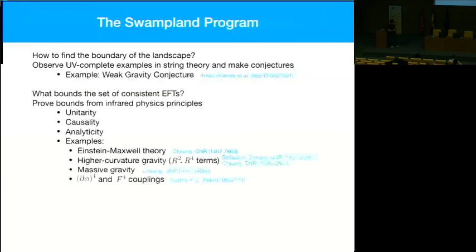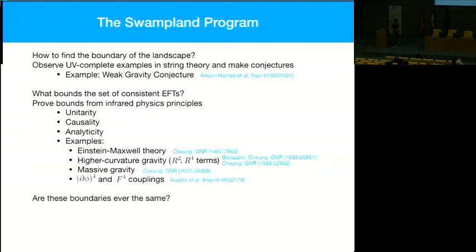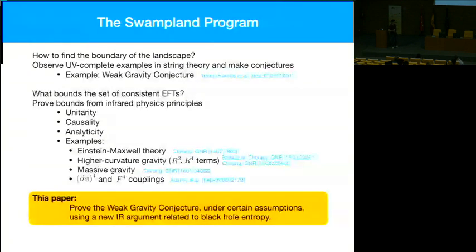Principles like unitarity, causality, and analyticity can bound all sorts of theories — massive gravity, higher curvature terms. This dates back to a Nima paper from 2006 on bounding d5 to the 4 and f to the 4th couplings. But in this talk I'm not going to discuss those infrared physics approaches; instead I'll introduce a new IR consistency approach — namely consistency of black hole entropy — and argue that we can use this to prove the weak gravity conjecture.